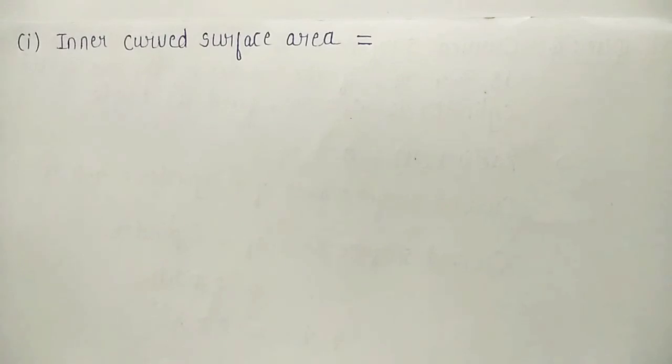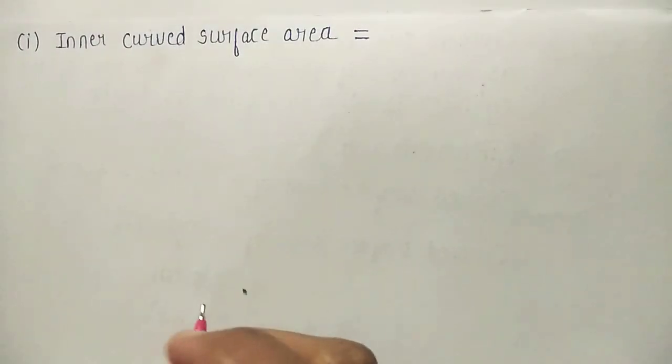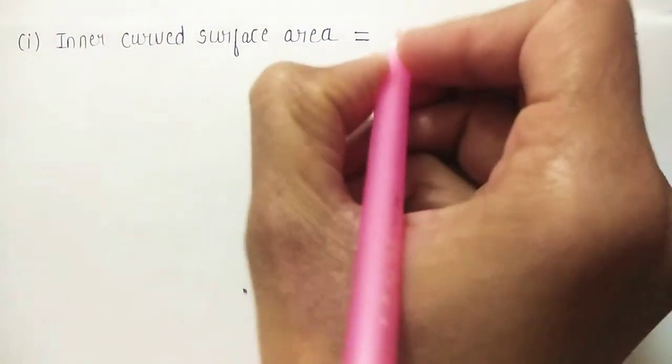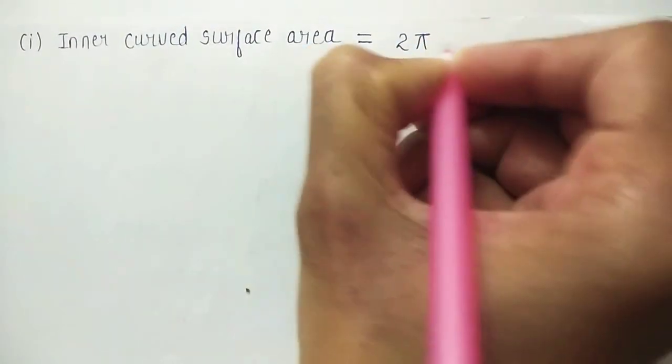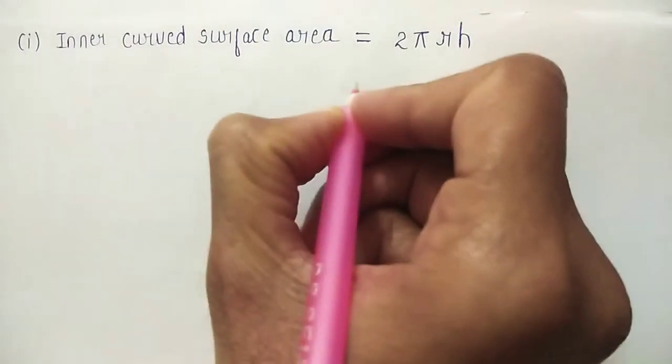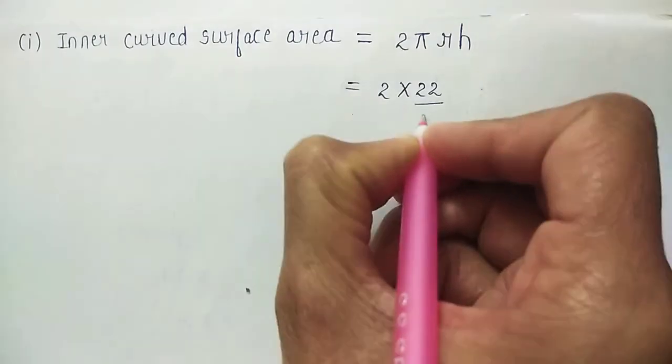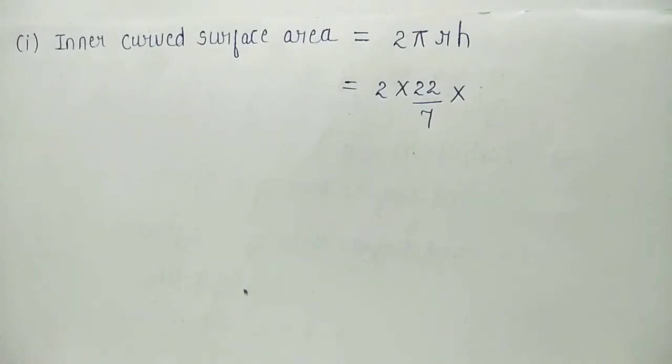What is the formula of curved surface area of a cylinder? It is 2 pi RH. So, here we will write inner curved surface area is equal to 2 pi RH. Now,